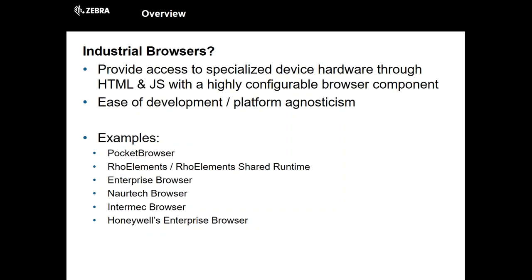They're also designed primarily for ease of development. JavaScript is a very easy language to get started with, one that's difficult to master, and it allows some form of platform agnosticism. Back in the day in a Windows Mobile CE environment, we were more concerned with different screen sizes, different versions of CE, different versions of the browser running on the device. Nowadays, we're into operating system agnosticism — we can just move to Android, whereas previously we were running on Windows Mobile CE. Some examples of industrial browsers: not just Zebra's — Pocket Browser, RhoElements, Shared Runtime, EB — but also from other companies: Nortec Browser, Intermec Browser, and Honeywell's Enterprise Browser.